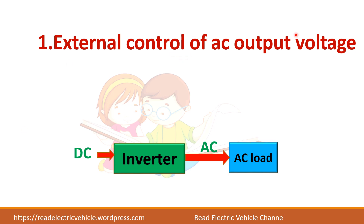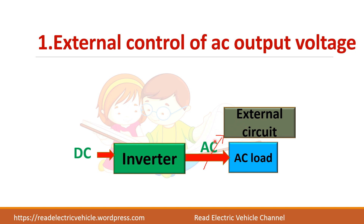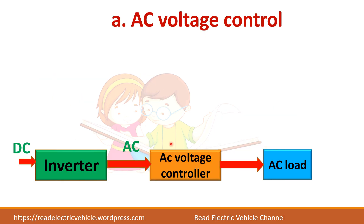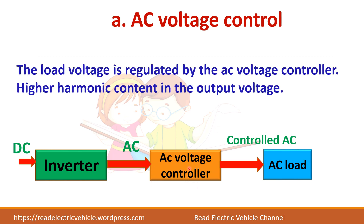The first method is external control of AC output voltage. You can either use an AC voltage controller or a series inverter at the AC end so that your AC becomes a controlled AC. In the AC voltage control method, the output of the inverter is given to the AC voltage controller, which converts the uncontrollable AC to a controlled AC output. The problem with this method is that it introduces more harmonic content into the output voltage, so this method is rarely used.